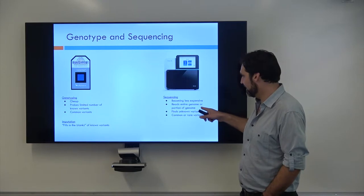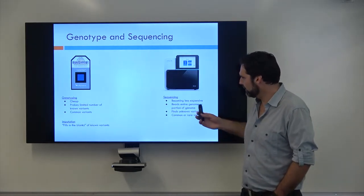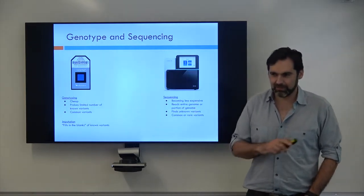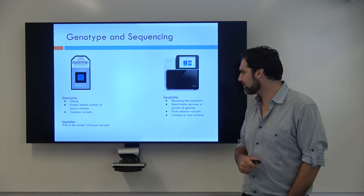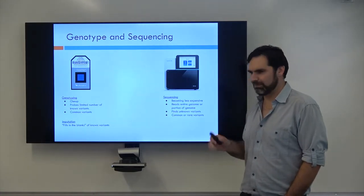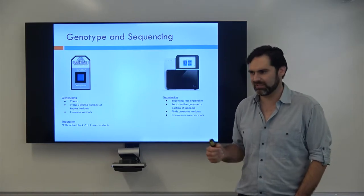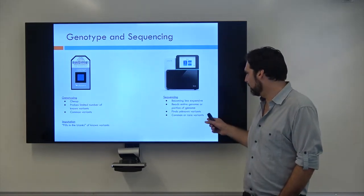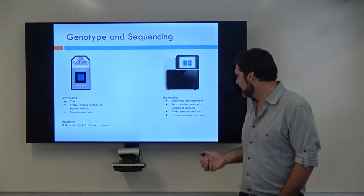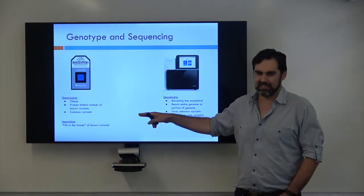Whereas sequencing, it costs like $1,000 to sequence somebody fully. And when you sequence somebody, you find out everything. You're just going to read the whole genome off. It's not quite that easy, but essentially you're saying I want to figure out all the variations, rare variations, common variations, things nobody's ever seen before. Sequencing tries to show you all of that. And so it can find things that aren't known about, whereas genotyping cannot.